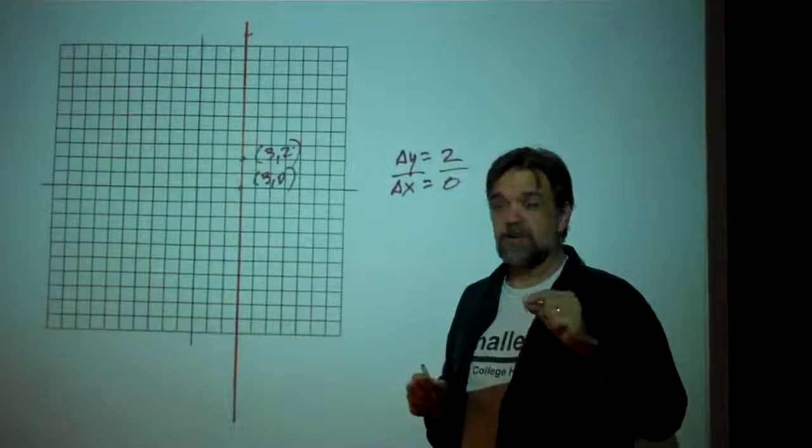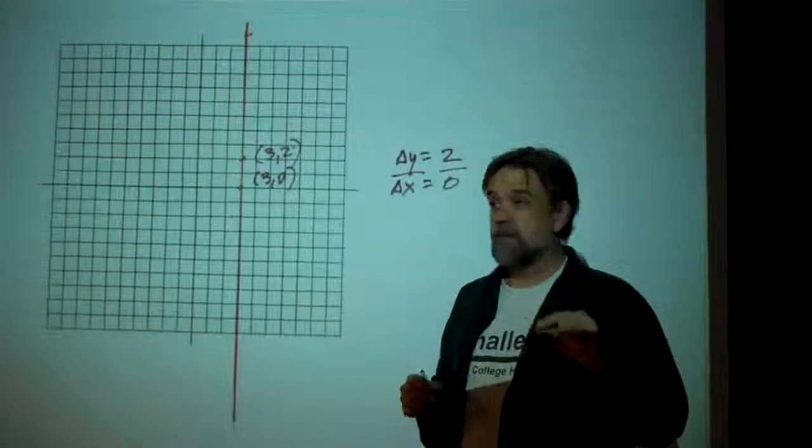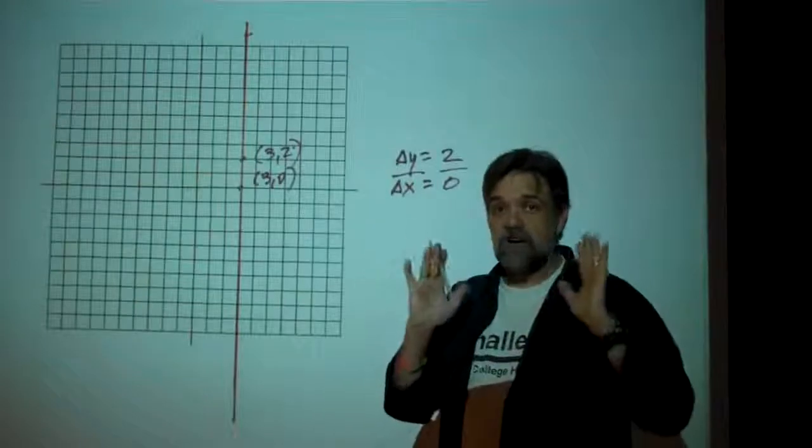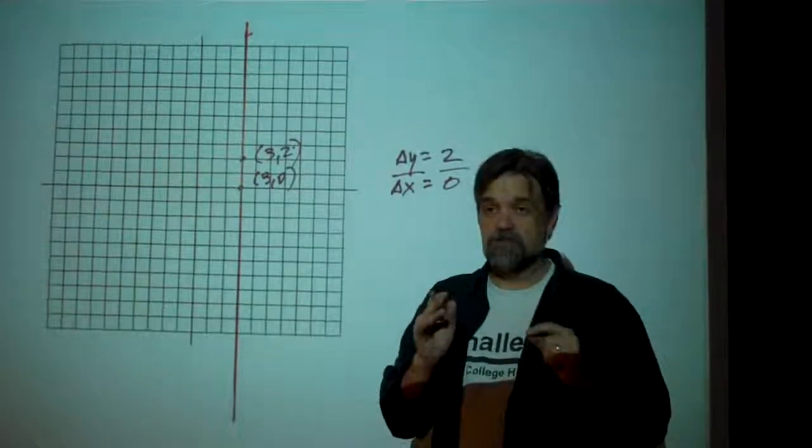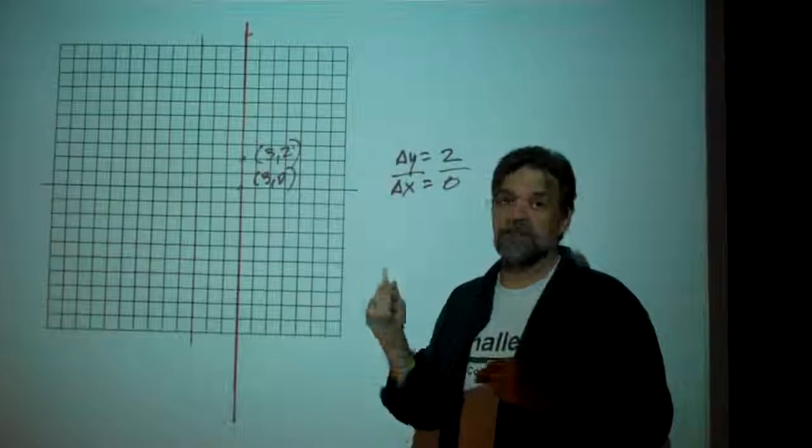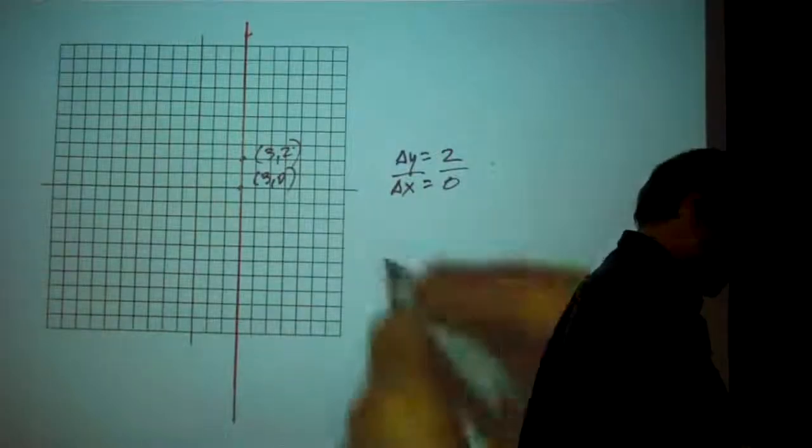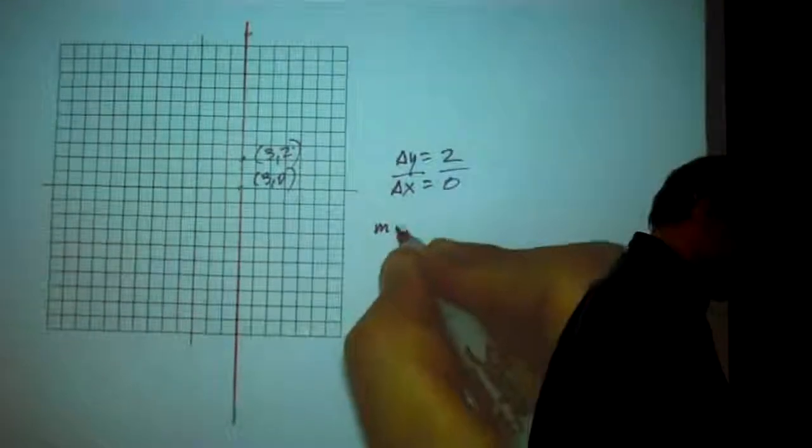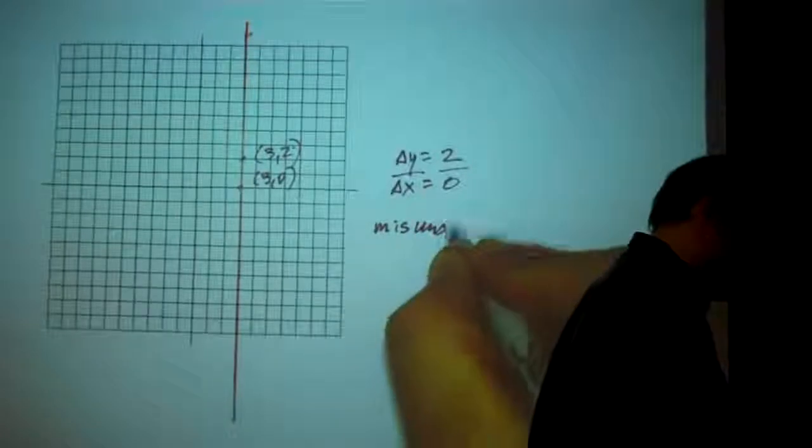there's no slope either. And again, when I say there's no slope, that doesn't mean the slope is 0. That means the slope is undefined. There is no defined number that will make this work. So we say the slope is undefined.